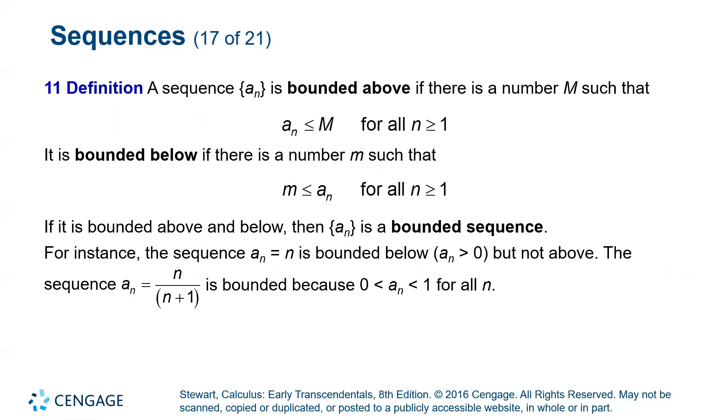Okay, more definitions. A sequence is bounded above if there is a number m such that every single term is less than that value, less than or equal to that value. And the opposite is if it's bounded below, you have lowercase m where every single term of the sequence is larger than that value.